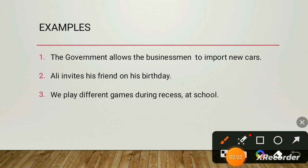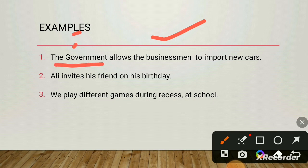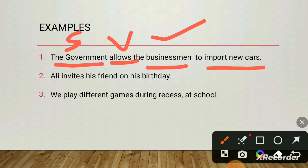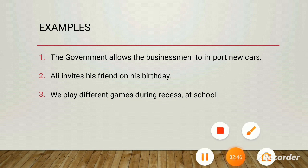Let's go through some examples. 'The government allows the businessman to import new cars.' Here, 'the government' is the subject, 'allows' is the verb, 'the businessman' is the object, and 'new cars' is the indirect object. We focus on three things: subject, verb, and direct object — these three are important for converting active to passive sentences. This is active voice because the government is doing some action.